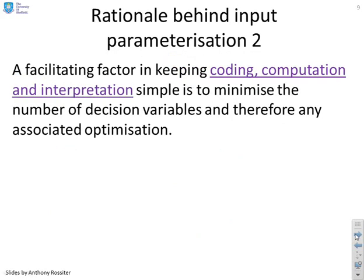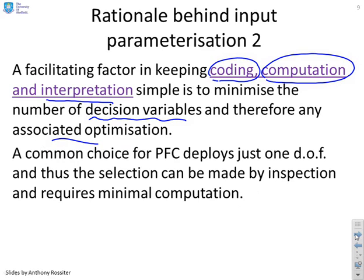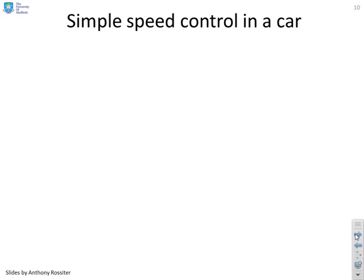This carries on the same theme: the rationale behind this parameterization is that we want to keep coding, computation, and interpretation as simple as possible. Therefore we want to minimize the number of decision variables and any associated optimization. A common choice for PFC is to use just one degree of freedom, because that makes the decision as simple as possible and requires minimal computation. All you're doing is choosing a single value of the input and assuming that input will stay constant in the future.